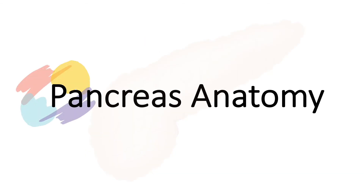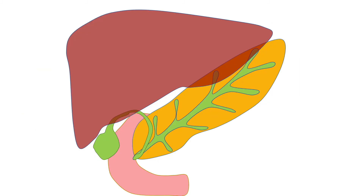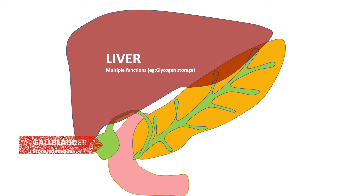Now we'll go through pancreas anatomy. Before looking at the anatomy of the pancreas, let's look at the surrounding organs. First, the liver is located just under the ribcage on the right side of the abdomen; one of its functions in this context is glycogen storage. Next is the gallbladder, whose role is to store and concentrate bile from the liver, which plays a role in digestion.